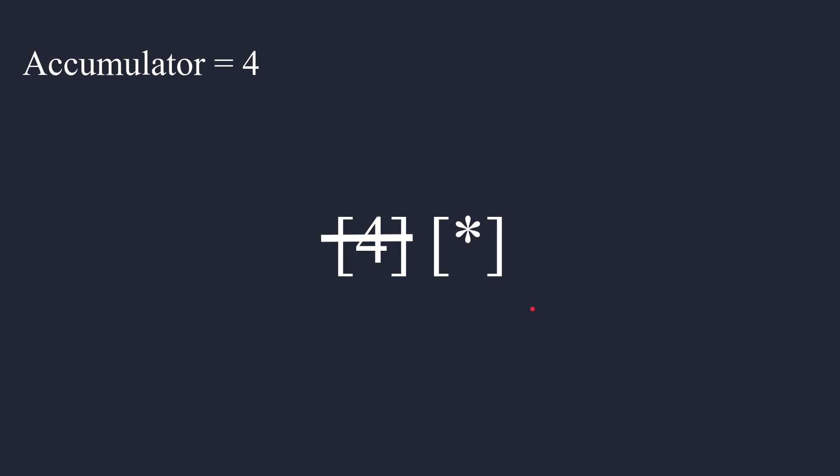We see a times. Great. I know what times means, but times what? We look at the next token. We see it's times 5. Great. Well, that means we just multiply the accumulator by 5. We get 20. Great. So now we could consume that, set the accumulator to 20. We move on.